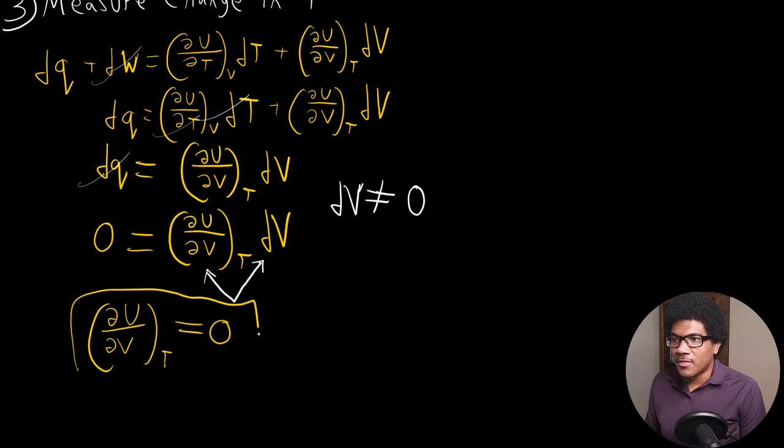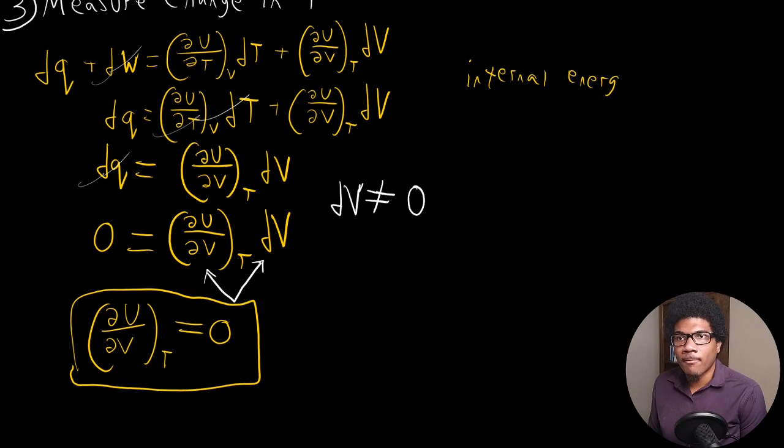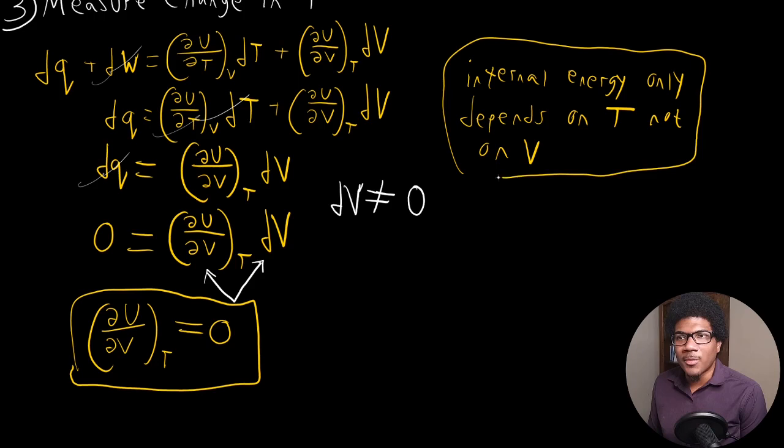This was the grand result from the Joule experiment. And so basically this concluded that internal energy only depends on temperature and does not depend on volume. So internal energy only depends on temperature, not on volume. So in words, this was the big conclusion from the Joule experiment.